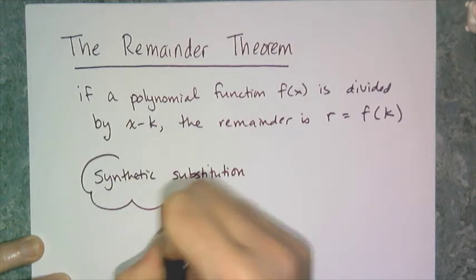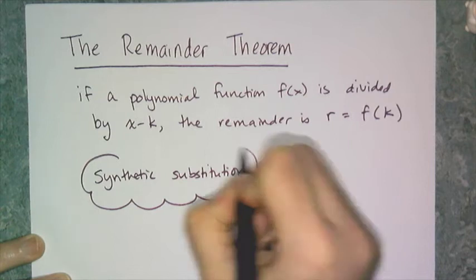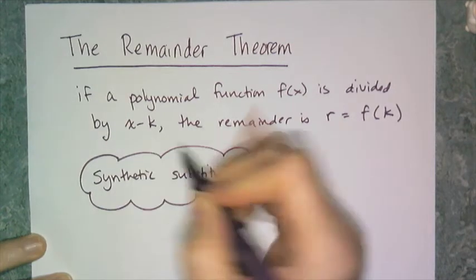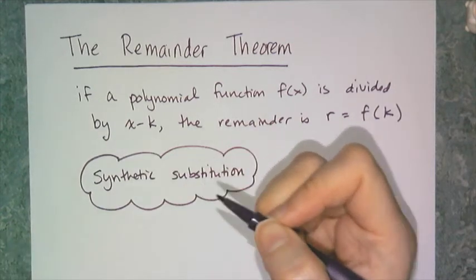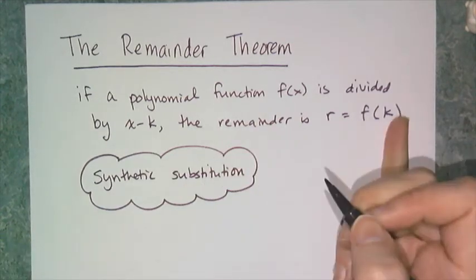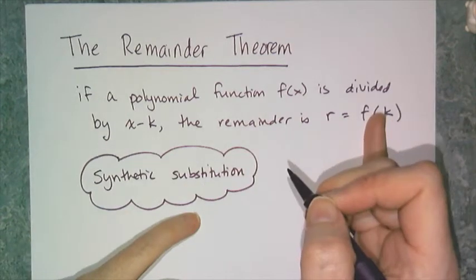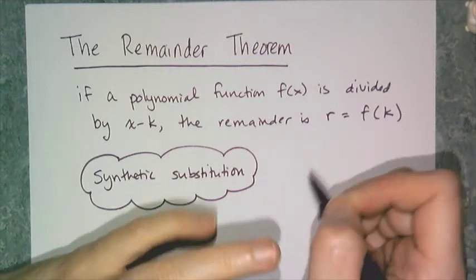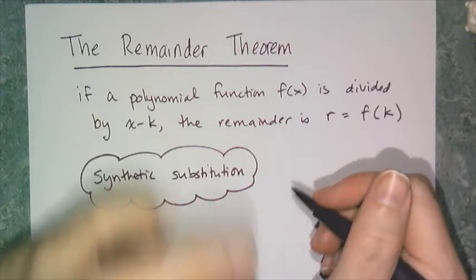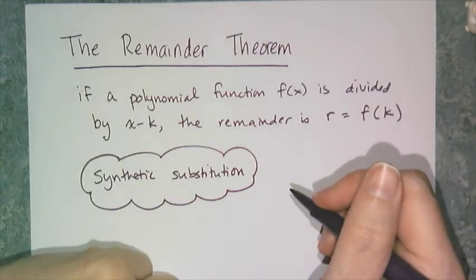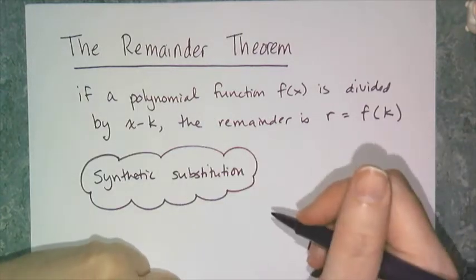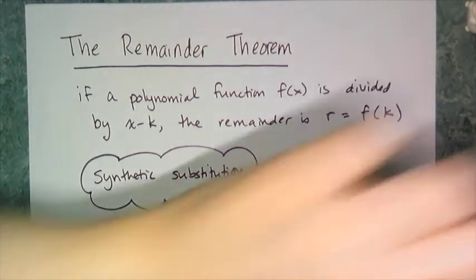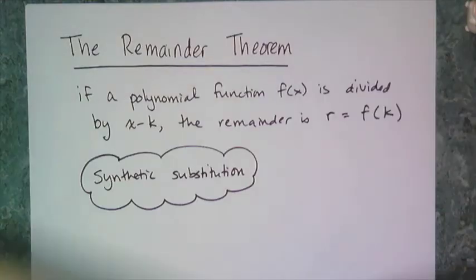That's a consequence of this theorem. So instead of plugging in the k value into the function and squaring it, cubing it, fifth powering it, whatever — you can just do synthetic division and you will get your value. So let's look at an example.